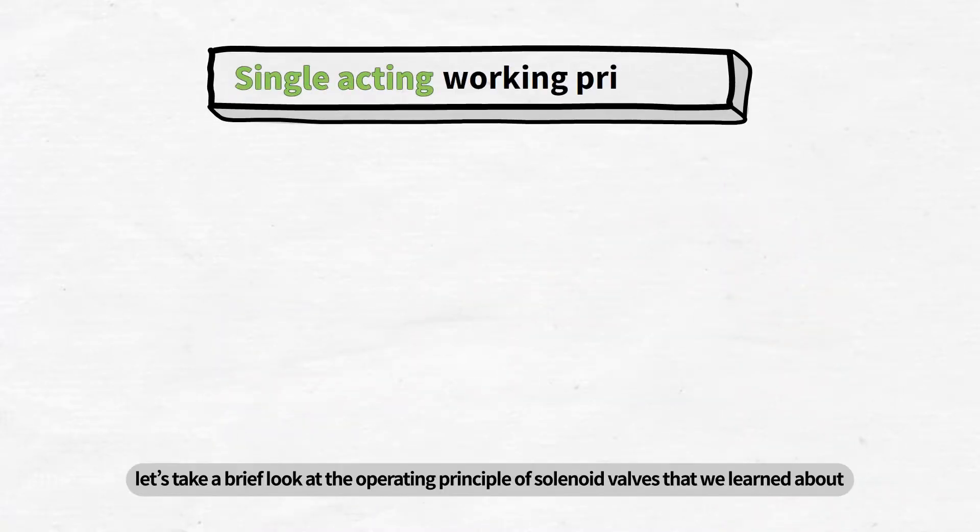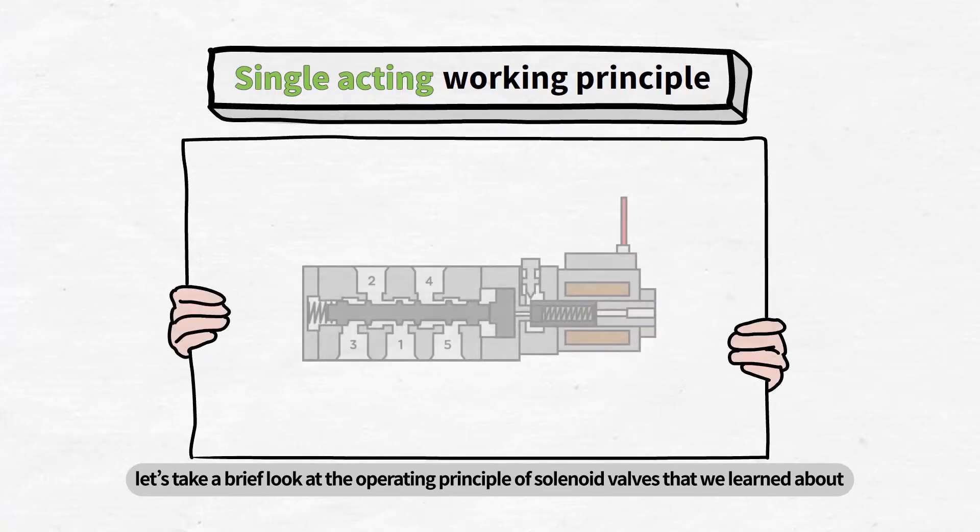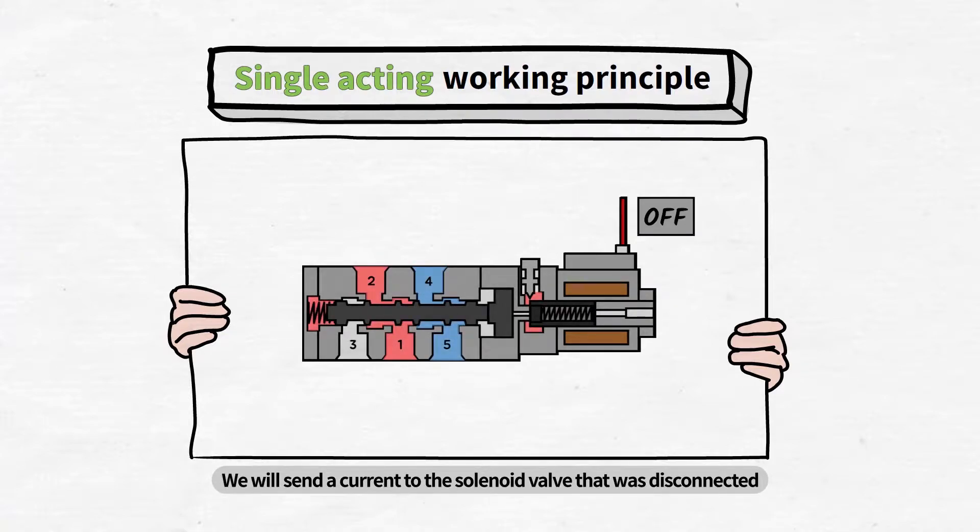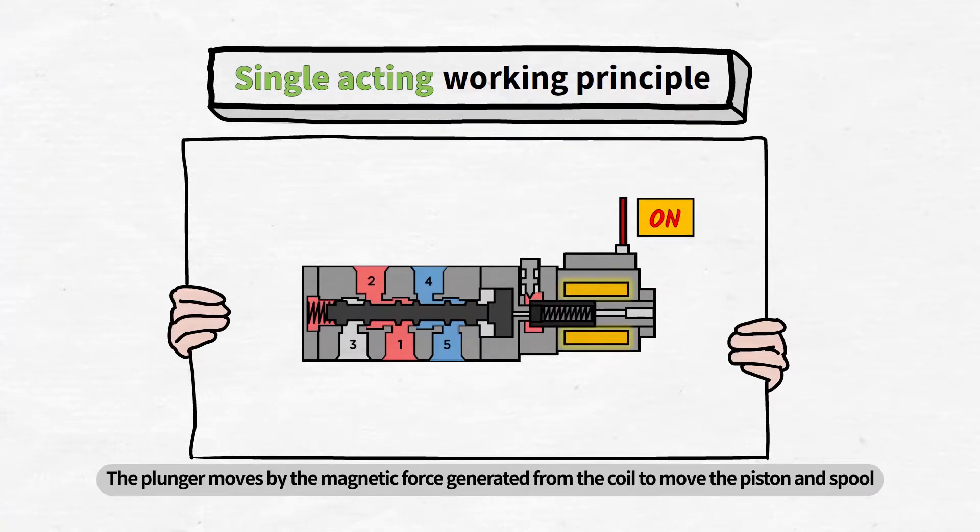Back to the main subject, let's take a brief look at the operating principle of solenoid valves that we learned about in the previous video. We will send a current to the solenoid valve that was disconnected. The plunger moves by the magnetic force generated from the coil to move the piston and spool.